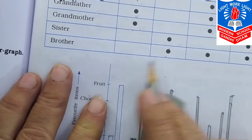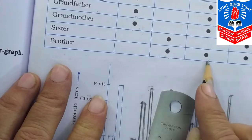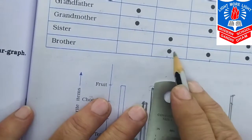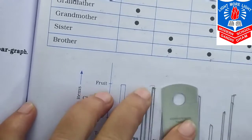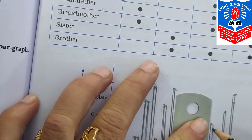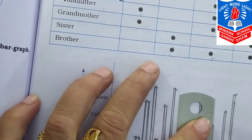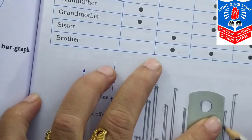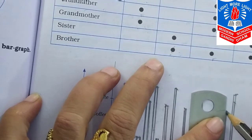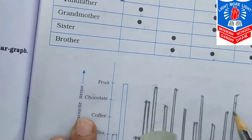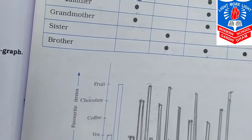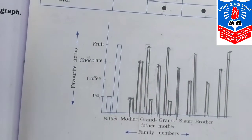Then brother likes coffee, chocolate and fruit. We mark coffee and draw a box, then draw a box for chocolate. In such a way we complete and draw our bar graph.